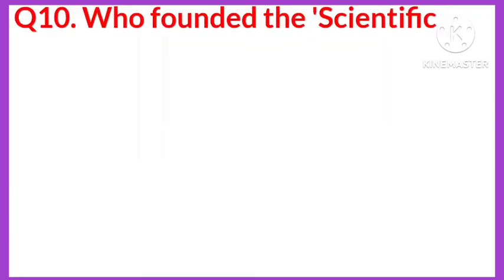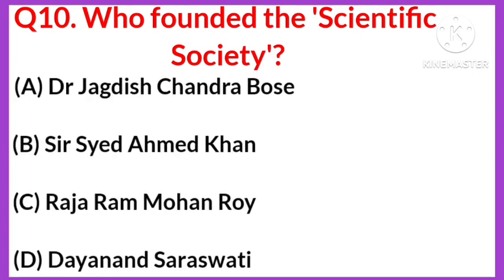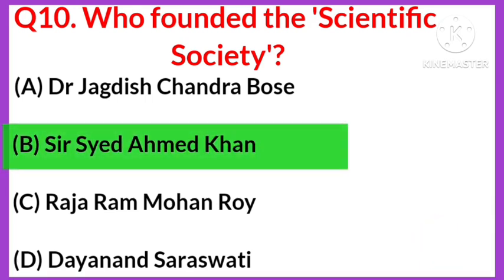Question number ten: who founded the Scientific Society? Your options are: A) Dr. Jagdish Chandra Bose, B) Sir Sayyid Ahmad Khan, C) Raja Ram Mohan Roy, D) Dayananda Saraswati. The right answer is option B, Sir Sayyid Ahmad Khan.